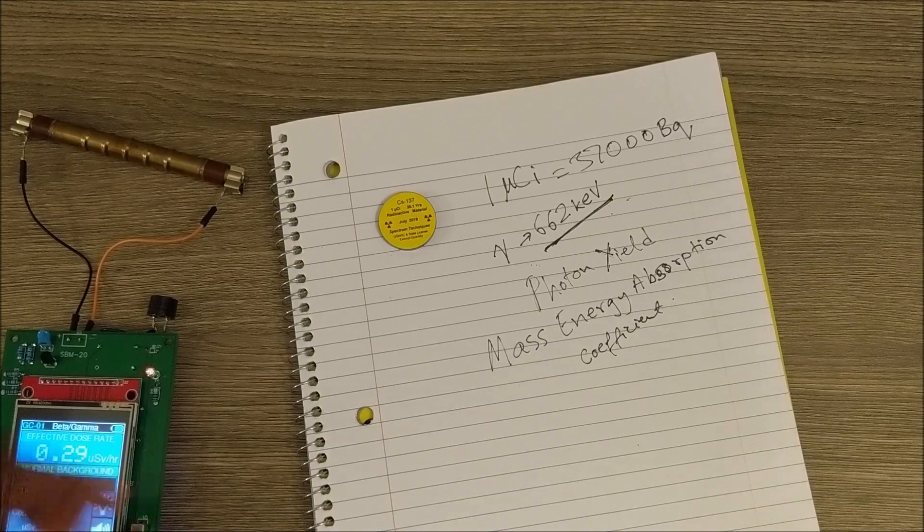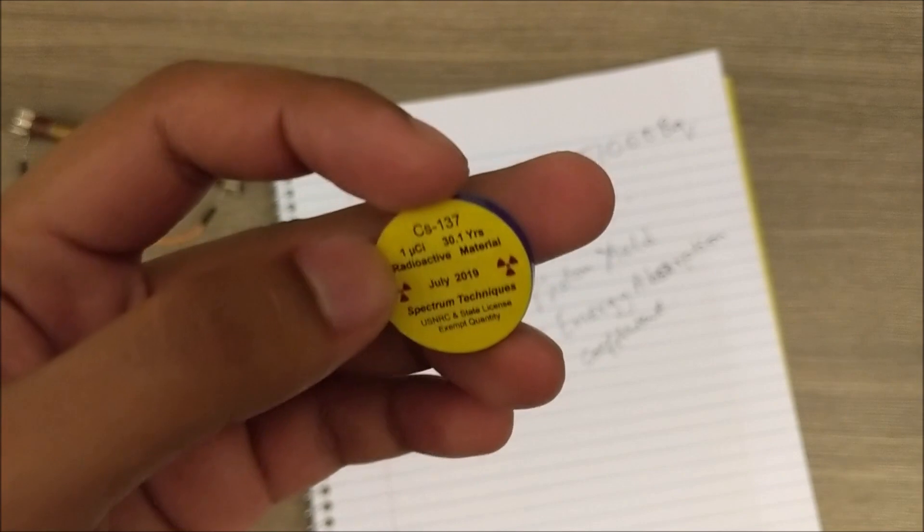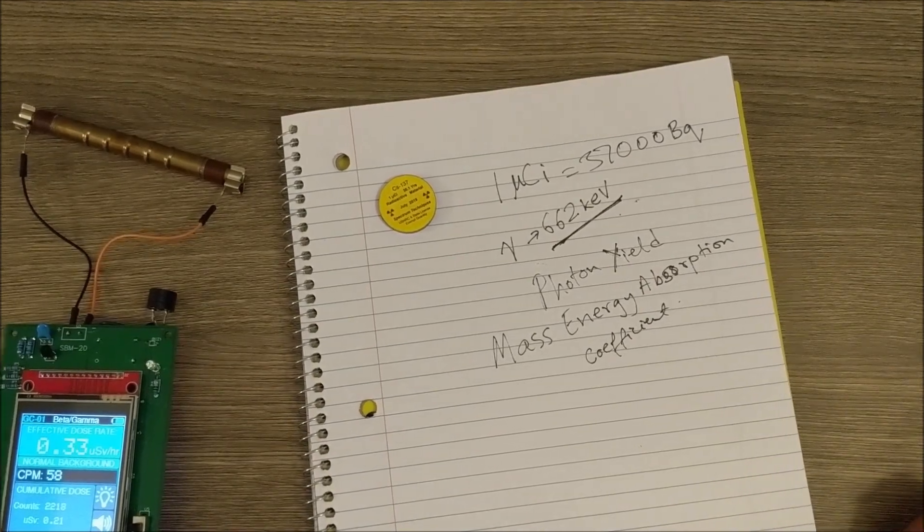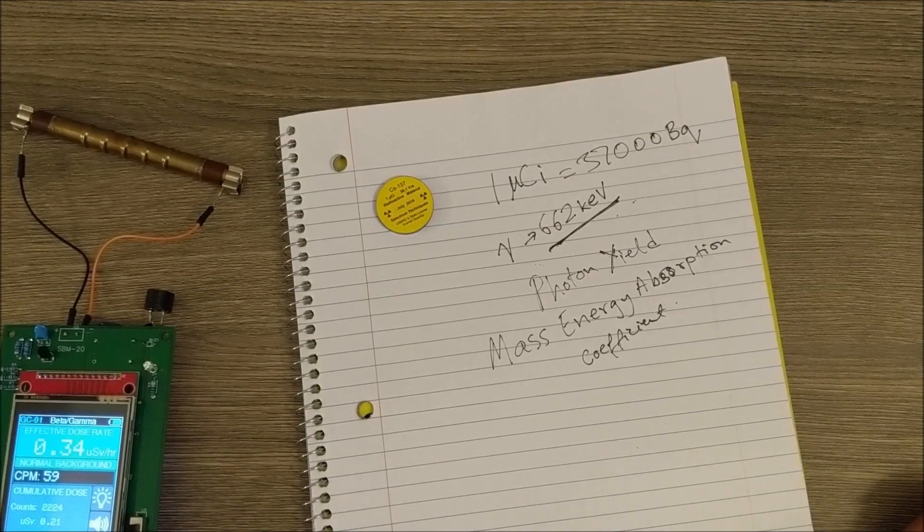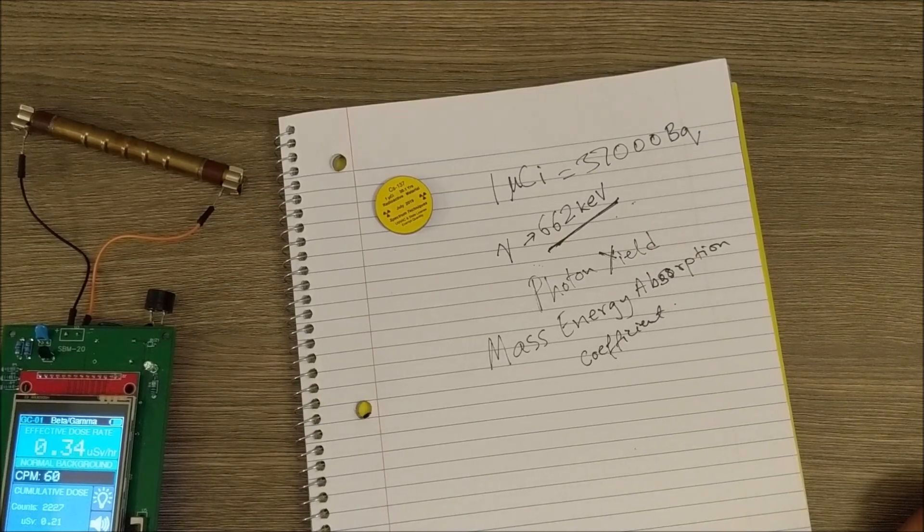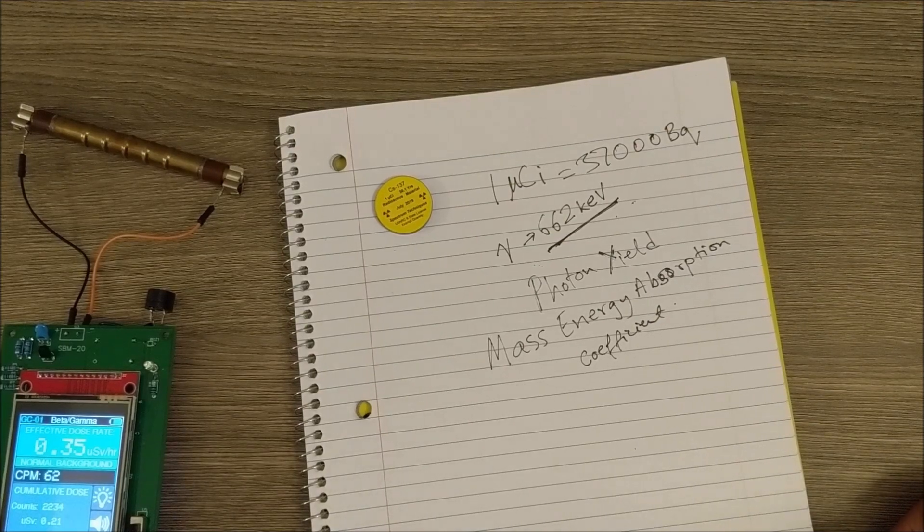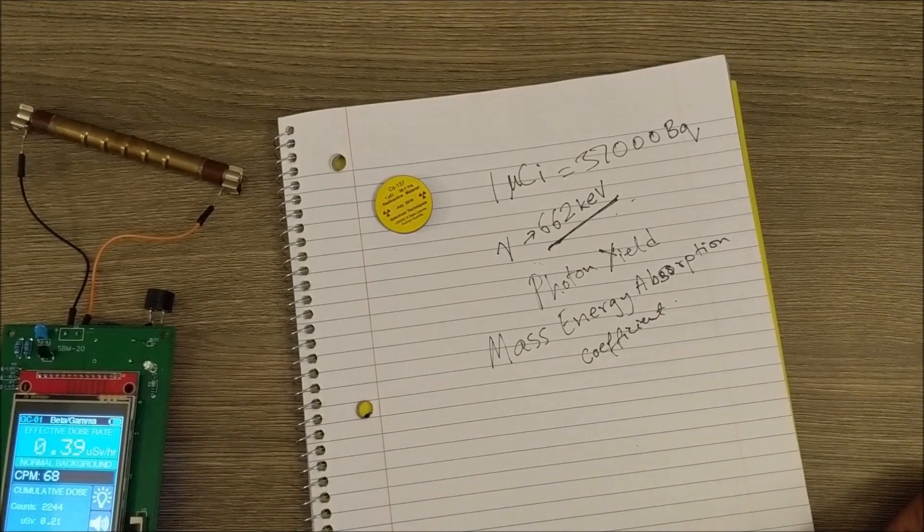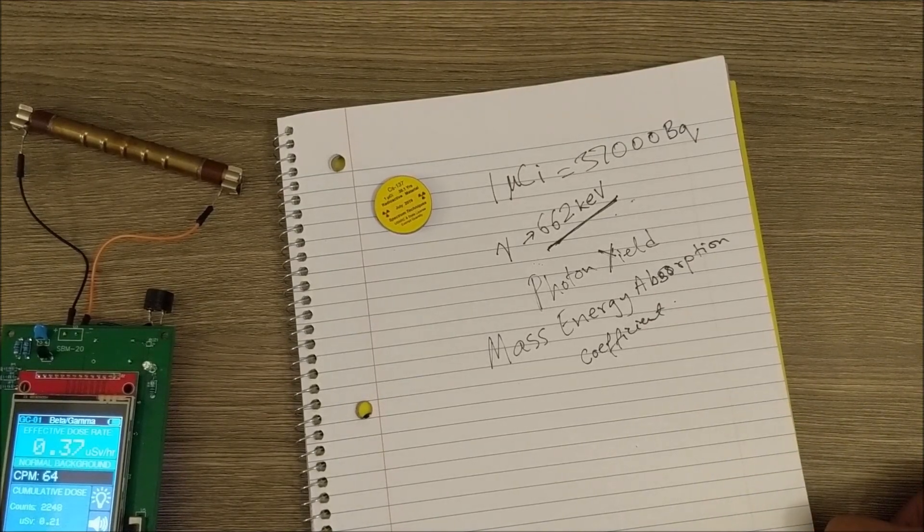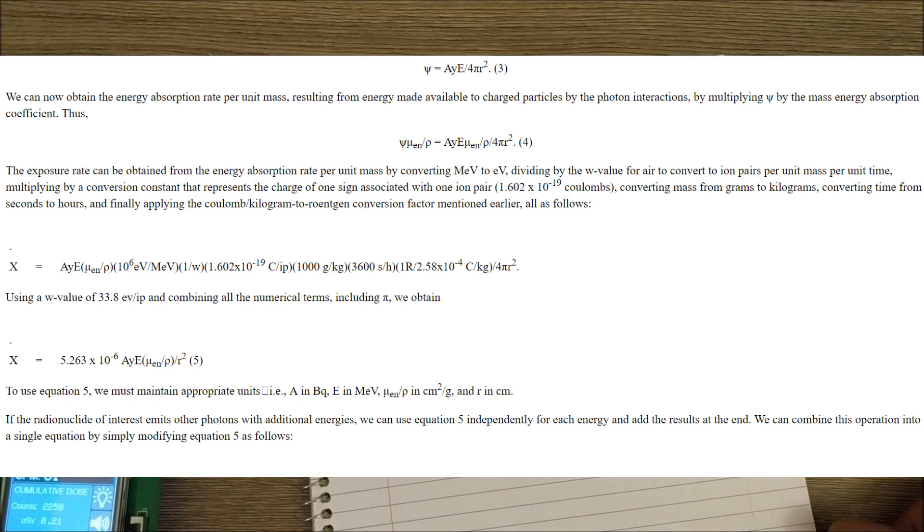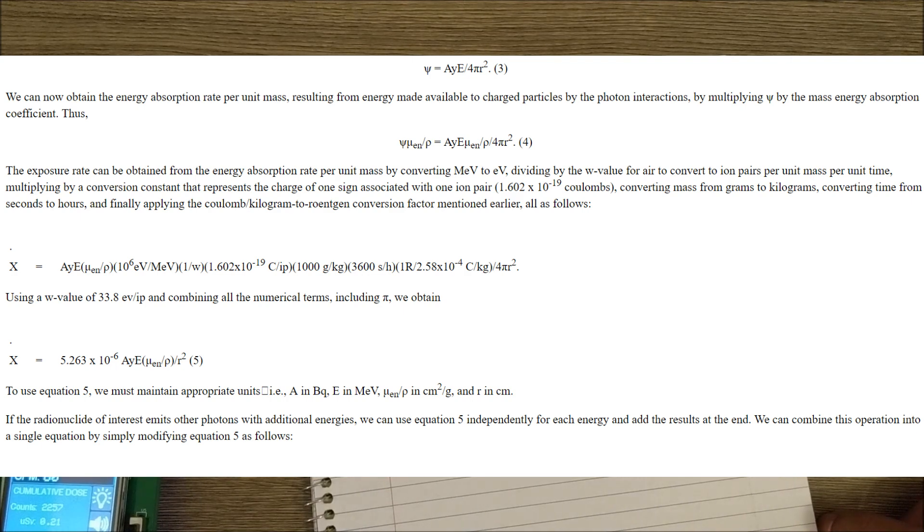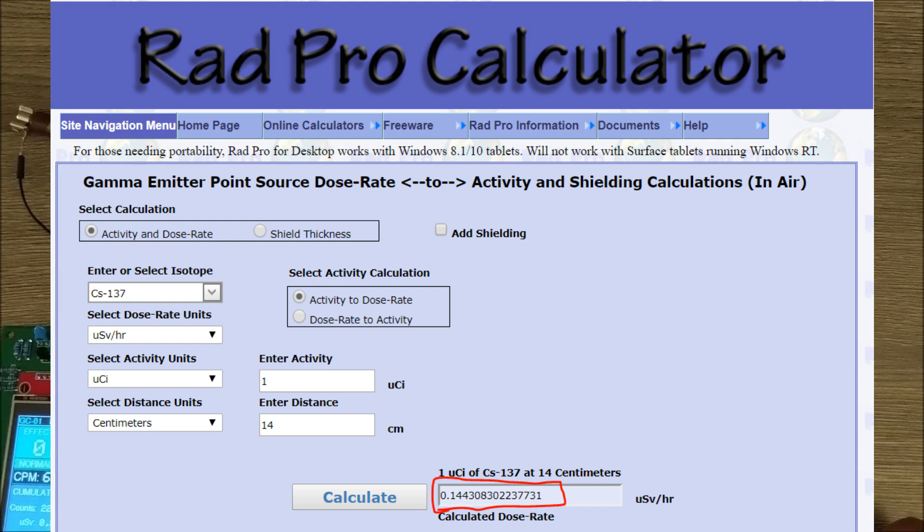Now to calculate the expected dose rate from our sample, we need to know a few things. First is the activity of our sample, which in our case is one microcurie. One microcurie means 37,000 decays per second—that includes all the decays, the beta and the gamma. Our gamma decay happens at an energy level of 662 kiloelectron volts. That's the characteristic gamma energy of cesium-137. We'd also need to know the photon yield, which basically just means the fraction of the total decay events that the gamma photons occupy, and then we'd also need to know things like the mass energy absorption coefficient of the air and a few other factors.